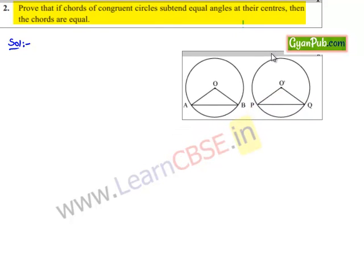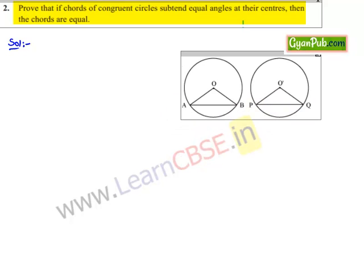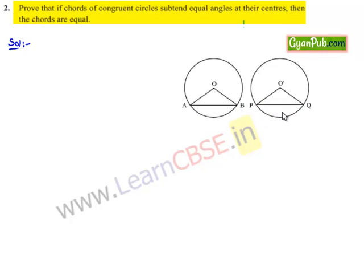Let AB and PQ be the chords in the two congruent circles which subtend equal angles at the center. That is, angle AOB is equal to angle PO'Q.